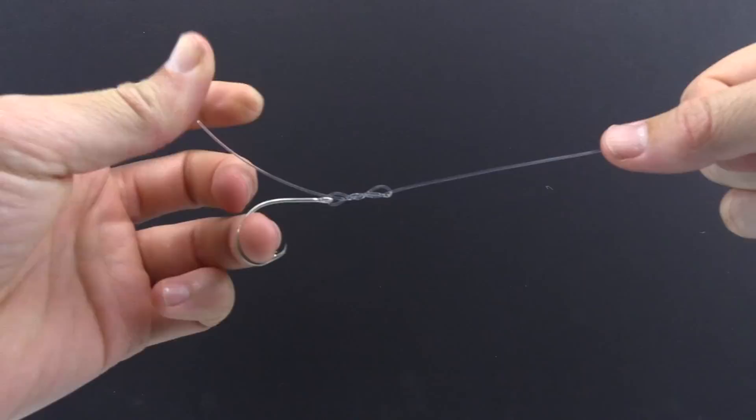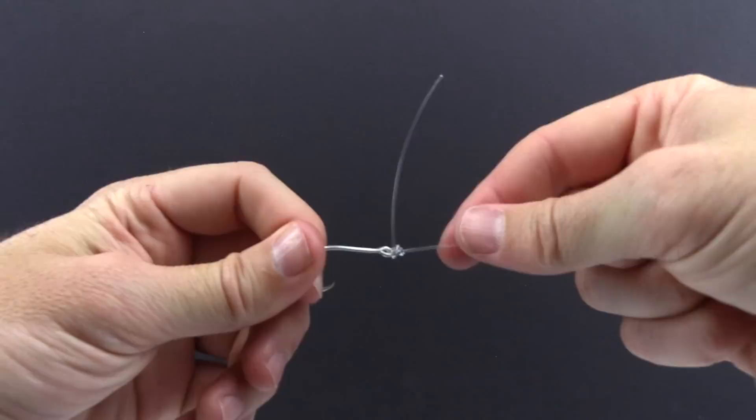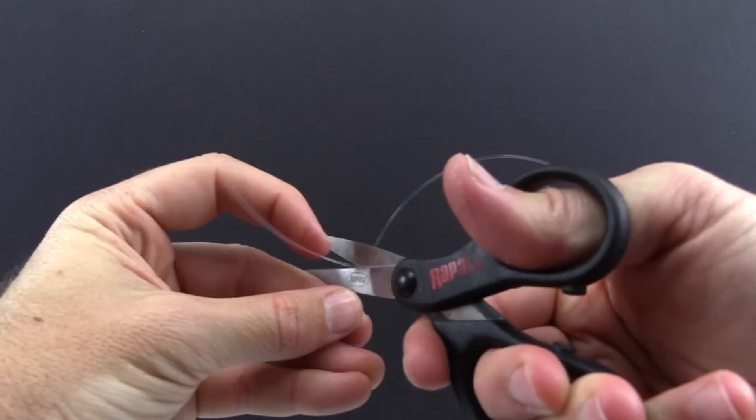At this point we can tighten it down and it's best to put a little bit of pressure on this tag end as we're pulling on the main line. I got it finger tight, now it's time to get some saliva on the knot. And now the final cinch. You know you have it right when the tag end will shoot up perpendicular to the knot.